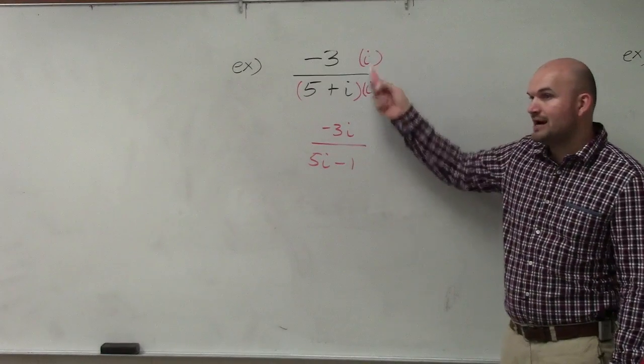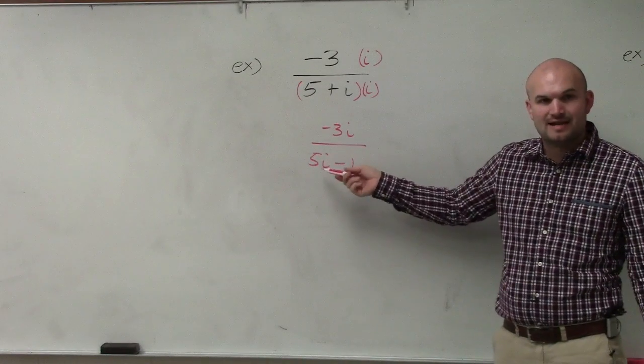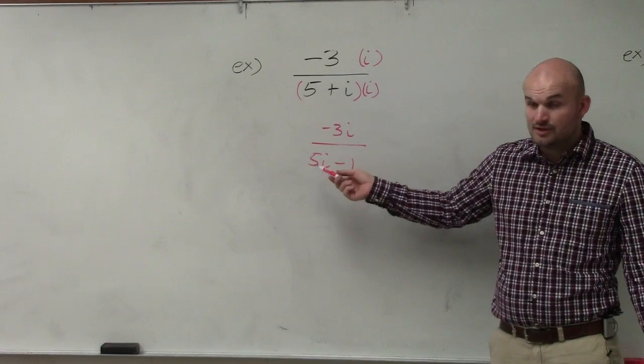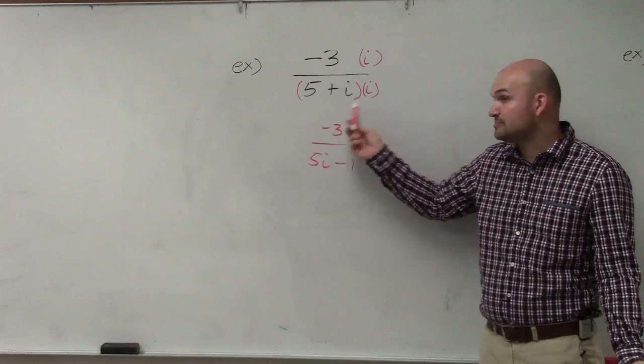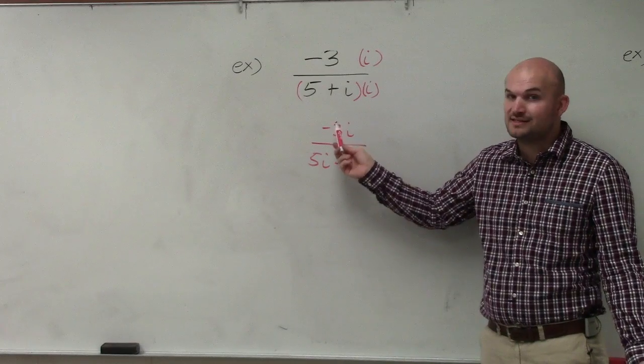Do you guys see though, by multiplying by i on the top and bottom, I still have an i in the denominator? So by multiplying by i when you have an expression, does not eliminate the i in the denominator.